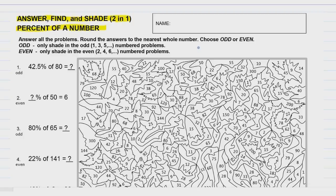For example, if I said you had 50% of 6, well 50% is half, so it's saying you have half of 6, which is 3. And that is the percent of a number.